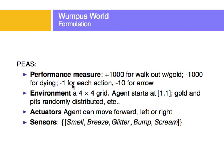The environment is a 4×4 grid, starting at 1,1, with gold and pits randomly distributed. The actuators allow the agent to move forward, left, right, or backwards. The sensors allow the agent to sense smell, breeze, glitter, bump, or scream. If the Wumpus screams, it was killed. If the agent bumps, it hit a wall.